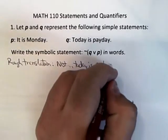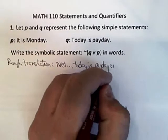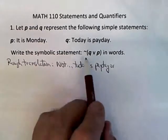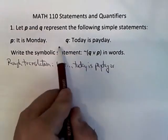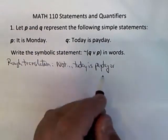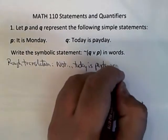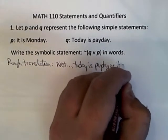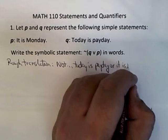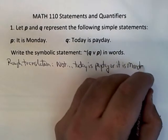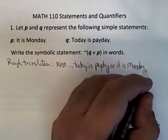This is 'or.' And P is 'it is Monday,' so the rough translation continues with 'or it is Monday.'